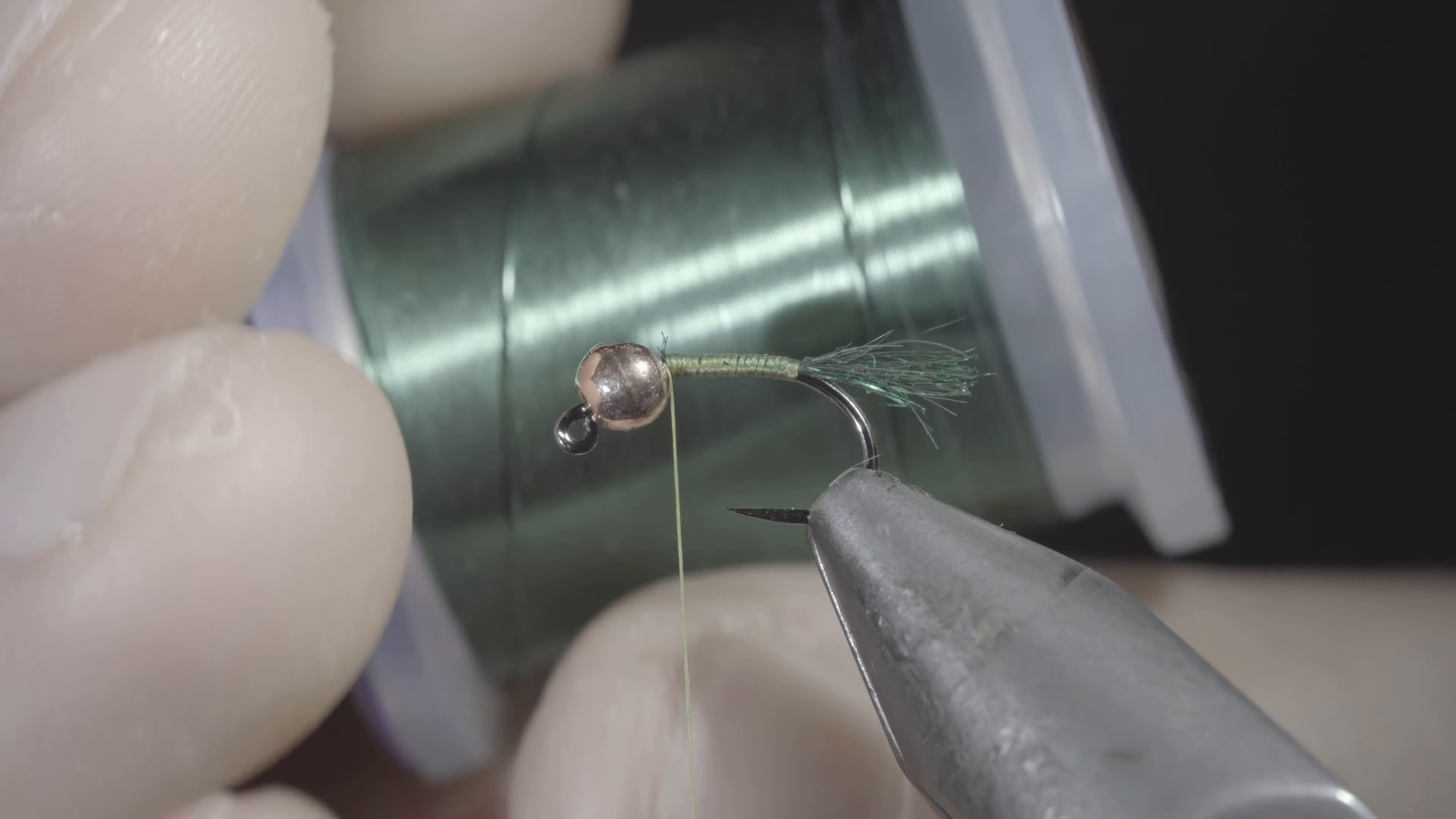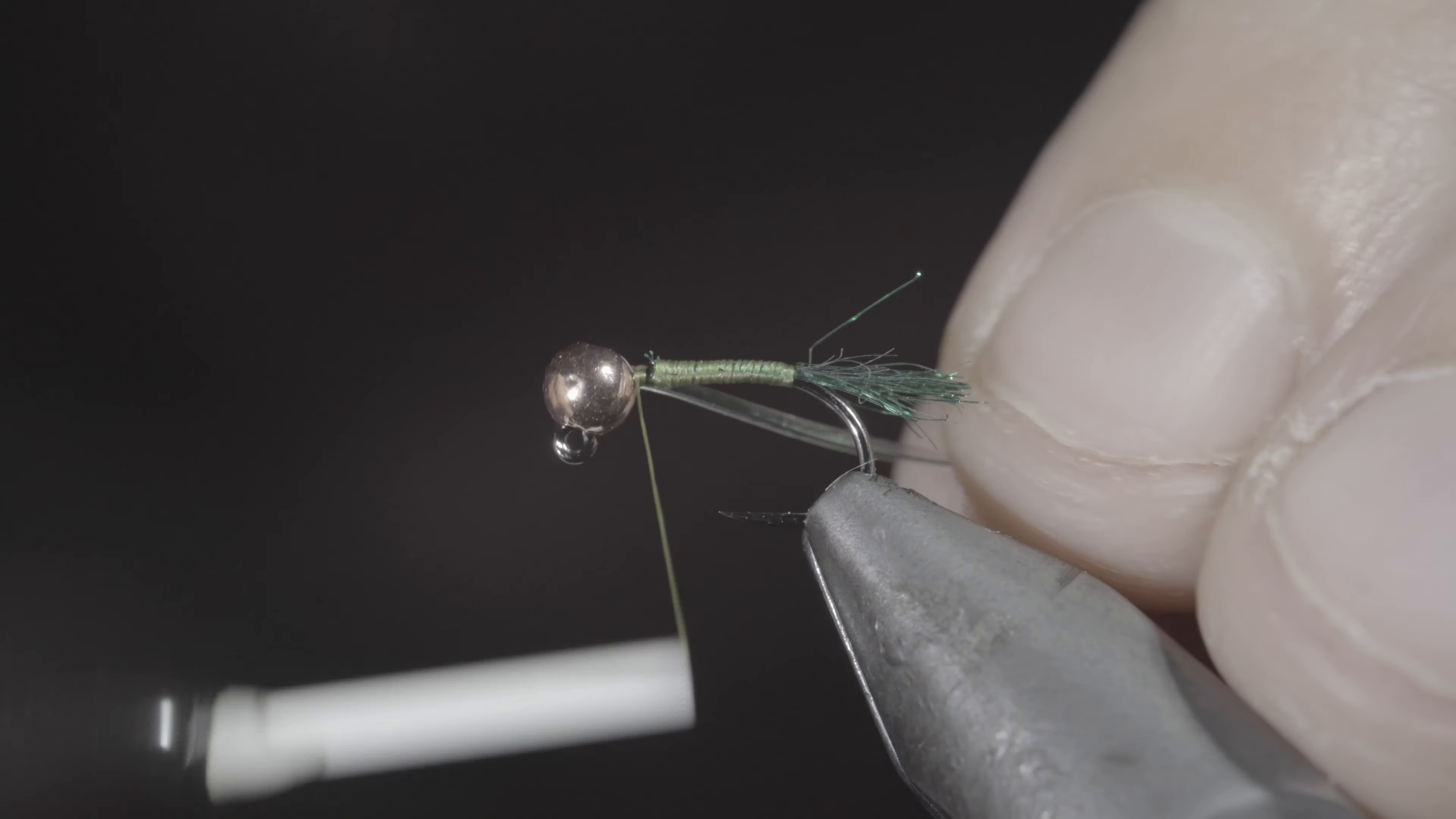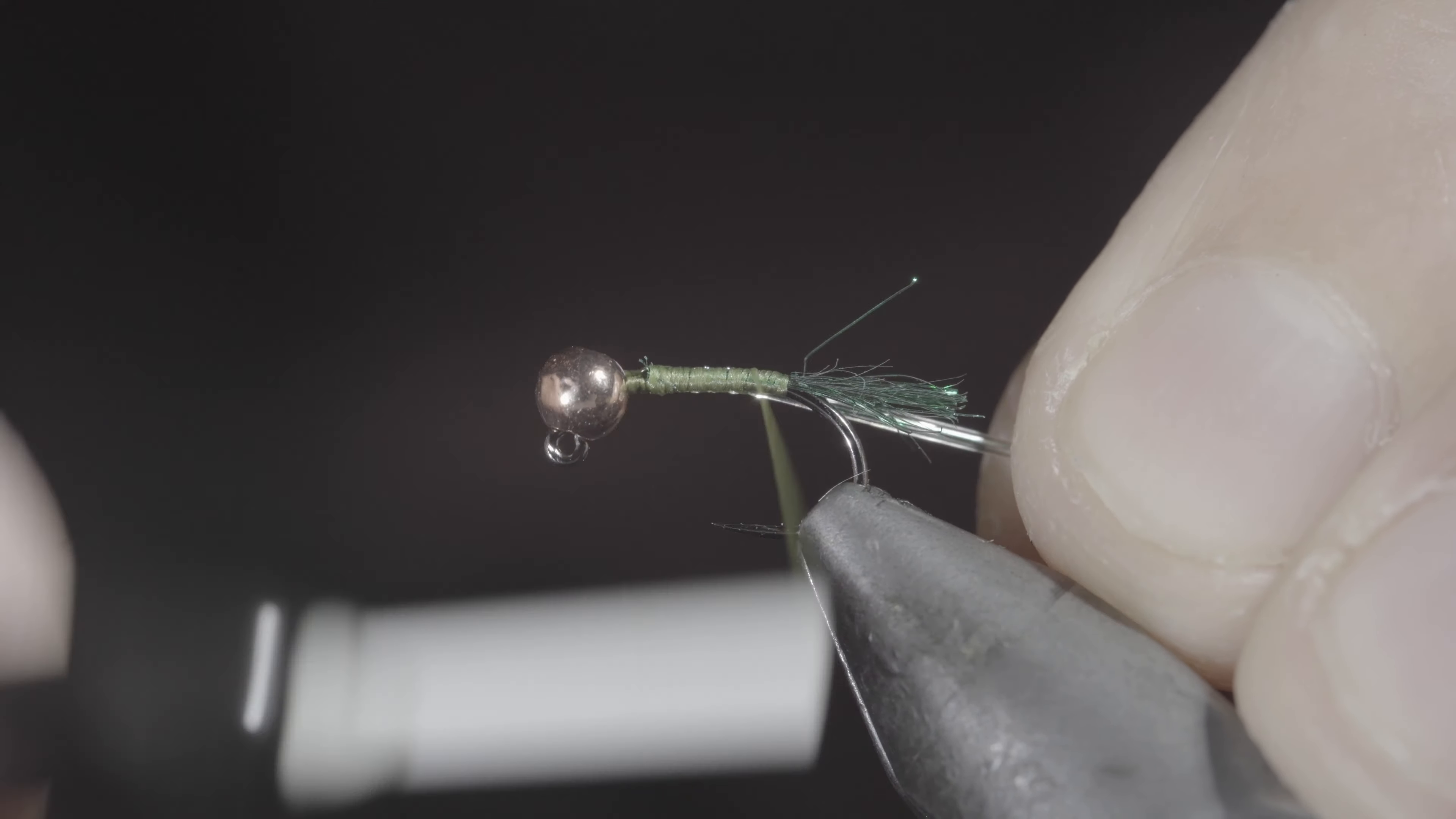we'll grab some small wire, here I'm using green, as well as some clear hollow tubing. Insert the wire into your tubing and secure it by inserting it into the bead and wrapping it tightly to the hook shank, continuing to do so until we reach our tag.